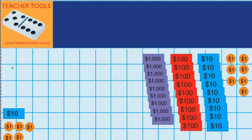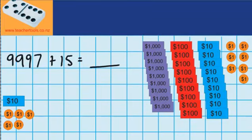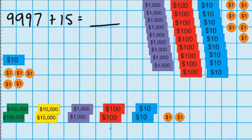Let's start with this question here. I've got $9,997 in my bank account, and I save another $15. I want to work out how much money I've got now. You can see over here I've laid out all the money that's in my bank account — I've got my $9,900, nine $10 notes, and seven $1 coins. Over here I've got the money that I've saved: $15, which is a $10 note and five $1 coins. And down the bottom here I've got the bank where I can go and exchange money if I need to.